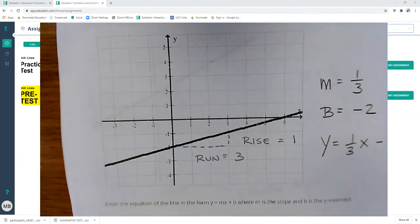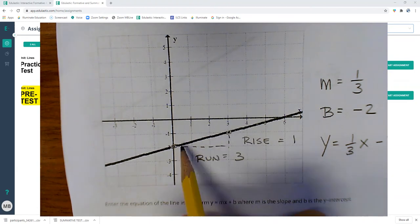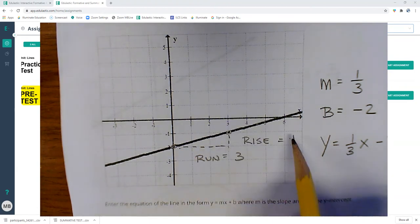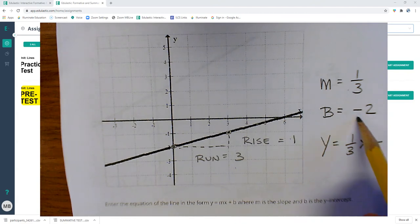Create the slope-intercept equation for this. Find two good points. There's a good point, there's a good point. Count the rise, count the run. The rise is one, the run is three. Actually, my slope is one-third. It's positive. My y-intercept is at negative two. Y equals mx plus b. I plug it in. There's my m, there's my b.